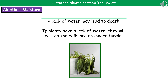The third abiotic factor is moisture. A lack of water can lead to death — inside our bodies, blood plasma's main component is water, so a lack of water will kill us. For plants, the initial impact is wilting: when they lack water, the cells are no longer turgid, meaning the cell walls are not held rigid and the plant droops.